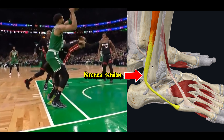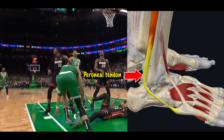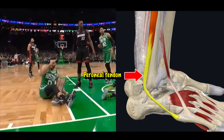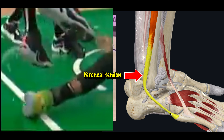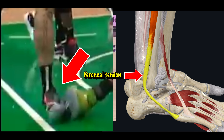This structure here is the fibularis brevis muscle. The white portion is also known as the peroneal tendon, which connects the muscle to the bone.